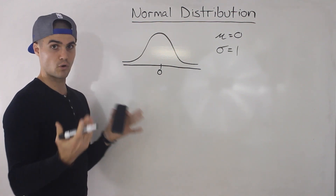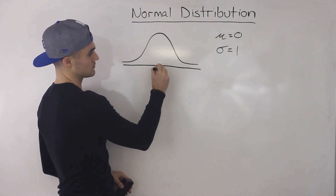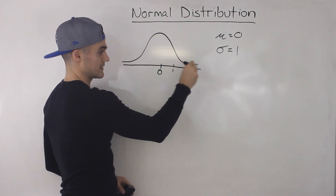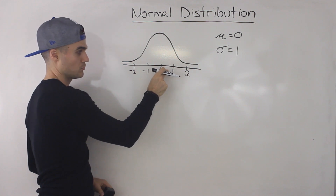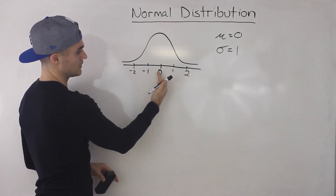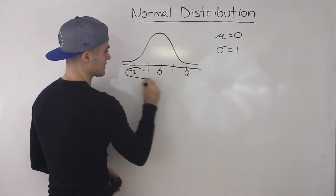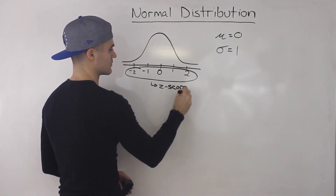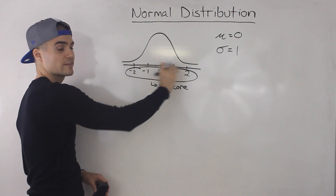One thing I want to mention is the format and the terms used to describe this distribution. You have zero over here, and then to the right of zero are all the positive numbers — one, two, etc. And to the left you have negative one, negative two, and numbers in between, like 0.5, 0.2, 1.2, 1.3, or even 1.35. All the negative numbers are to the left of zero, all the positive numbers to the right of zero. All of these numbers on the axis are called Z-scores. Whenever you see them talking about a Z-score in your textbook, they're talking about these numbers on the bottom axis.